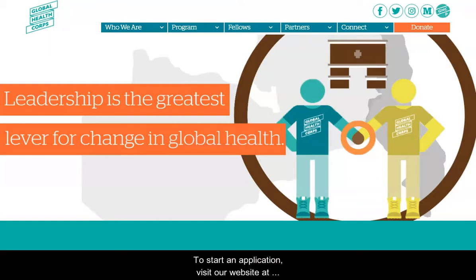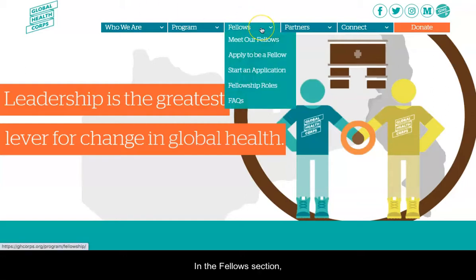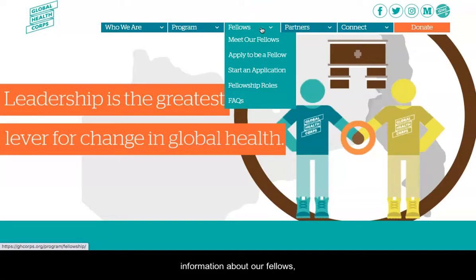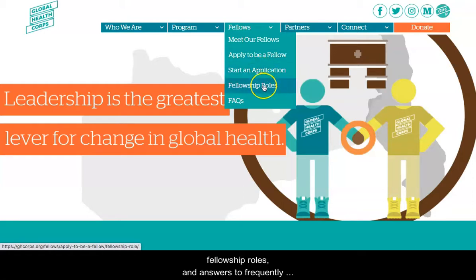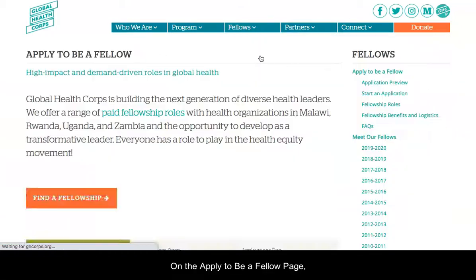To start an application, visit our website at www.ghcore.org. In the Fellows section you'll find more information about the fellowship program, information about our fellows, about the application process, starting an application, fellowship roles, and answers to frequently asked questions on the Apply to BFL page.